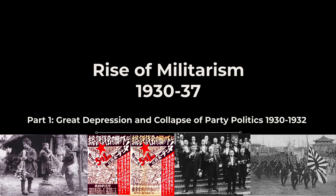The images below give you a sense of the period. We go from children scrounging for meals due to the Great Depression, then see a socialist and labor movement spurred by the Depression. The next image shows the Saito cabinet — the first cabinet not controlled by a parliamentary party — marking the end of the fragile parliamentary democracy of the Taisho government, and ultimately the rise of militarism. If you haven't watched the tutorial videos on the Taisho period, the Zaibatsu, the Constitution, political parties, and bureaucratic elites, go back and watch those first.